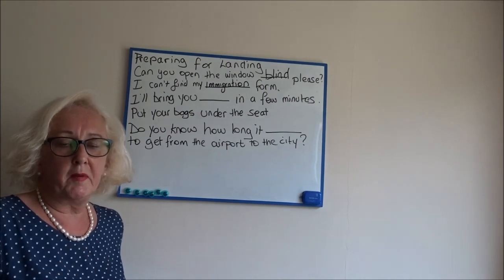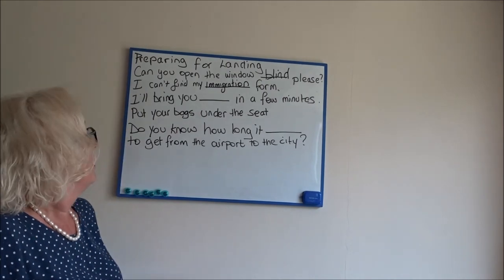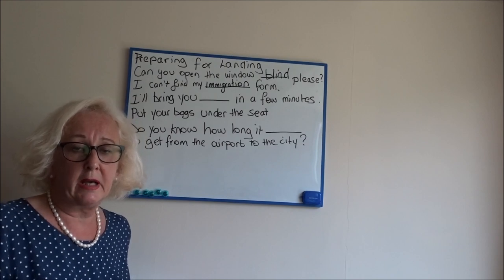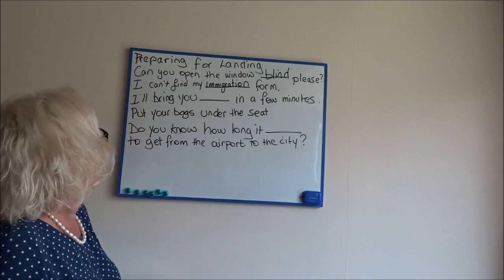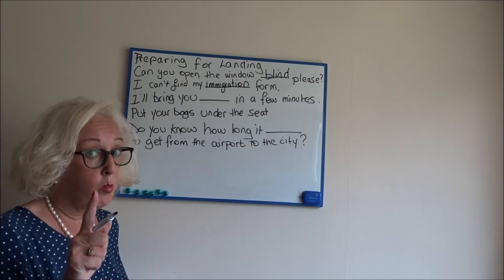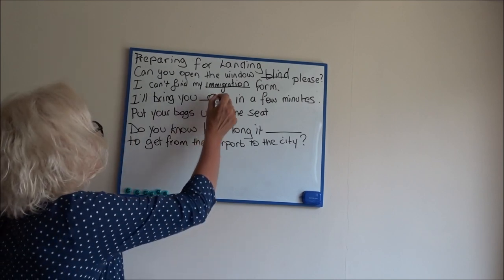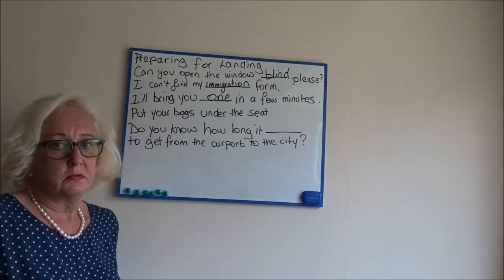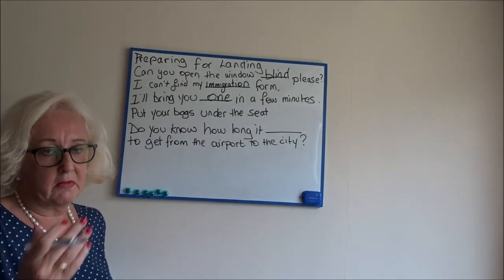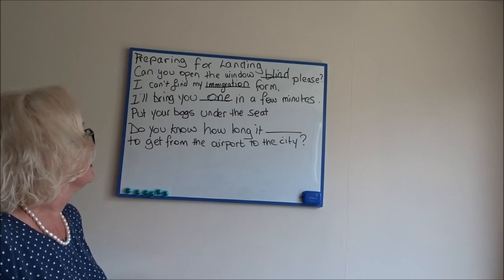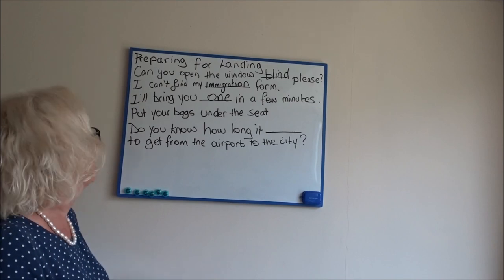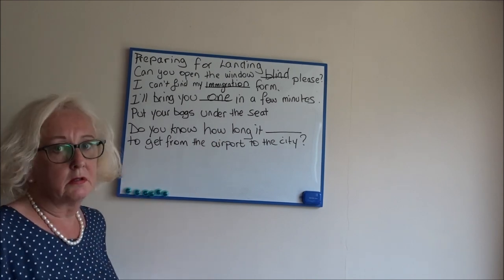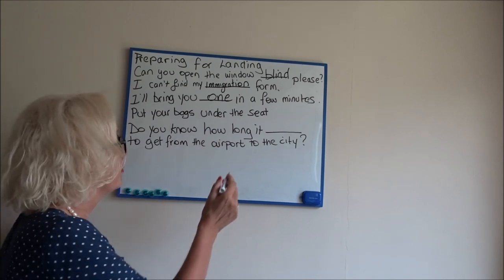Now, if a passenger said to you, 'I can't find my immigration form,' what would you say as a cabin crew member? You'd say: 'I'll bring you one in a few minutes.' Something else you would say as you're coming in to land or preparing for landing: 'Put your bags under the seat in front of you.'